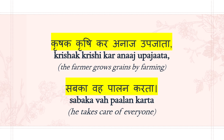Krishak krishikar anaj upajata. Upajata means the yield you get after farming. Anaj means grains. Krishi means farming. Krishak means farmer. So the farmer grows grains by farming.